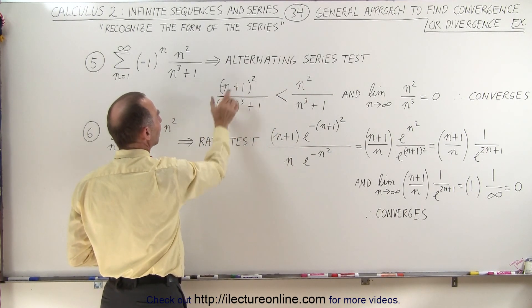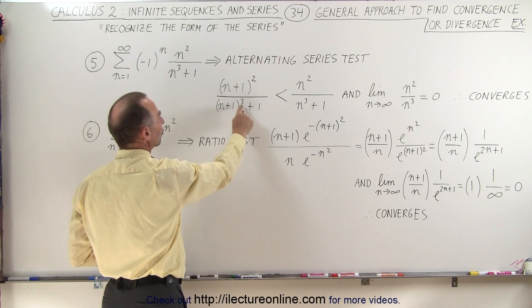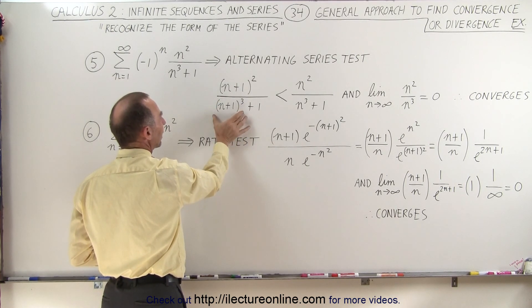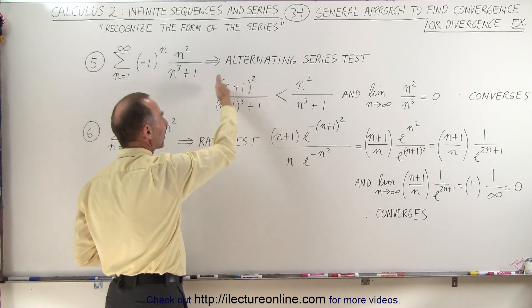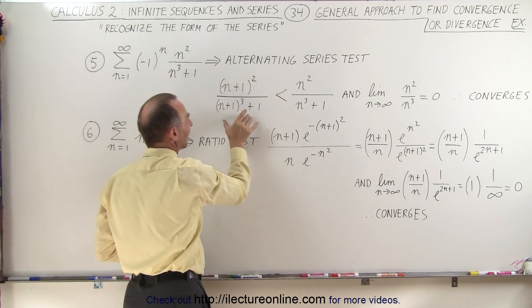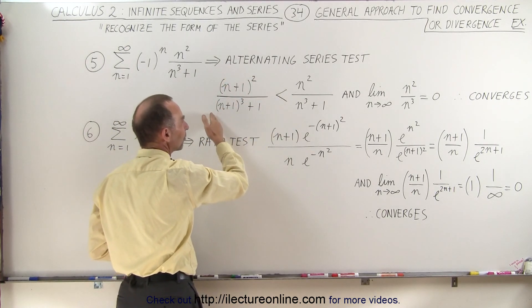when you let n go to n plus one, since the denominator is raised to the third power, the denominator grows faster than the numerator, which means that this will become a smaller and smaller fraction, and therefore consecutive terms will become smaller.